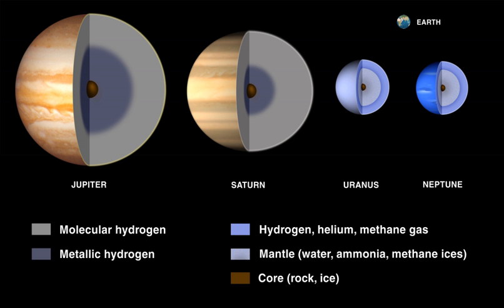A major source of differentiation is fractionation, an unequal distribution of elements and isotopes. This can be the result of chemical reactions, phase changes, kinetic effects, or radioactivity. On the largest scale, planetary differentiation is a physical and chemical separation of a planet into chemically distinct regions. For example, the terrestrial planets formed iron-rich cores and silicate-rich mantles and crusts.